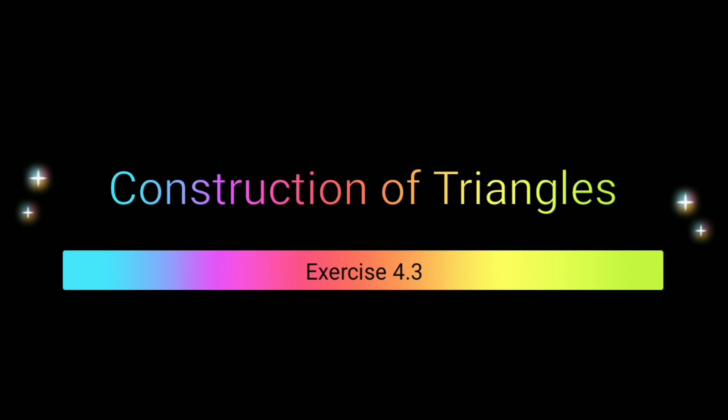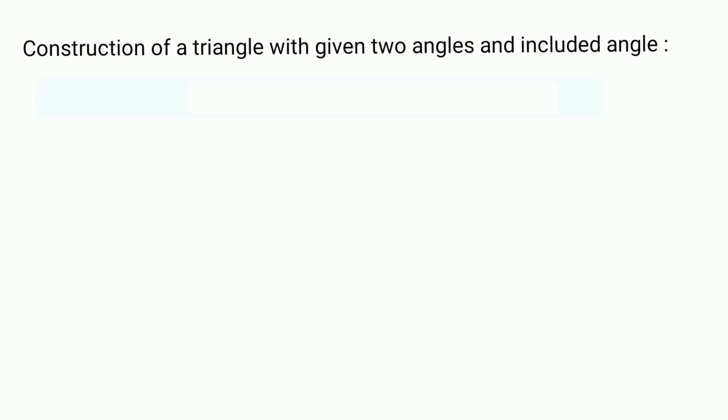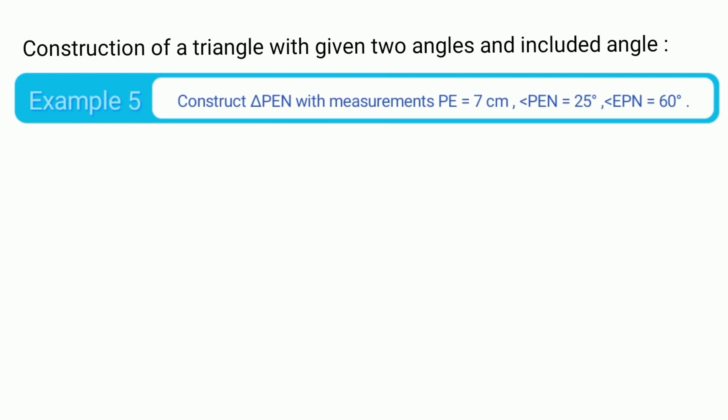Hello everyone, welcome to High School Mathematics channel. Today we are going to learn class 7 M2 chapter 4, construction of triangles, exercise 4.3. We will cover construction of a triangle with given two angles and included side.